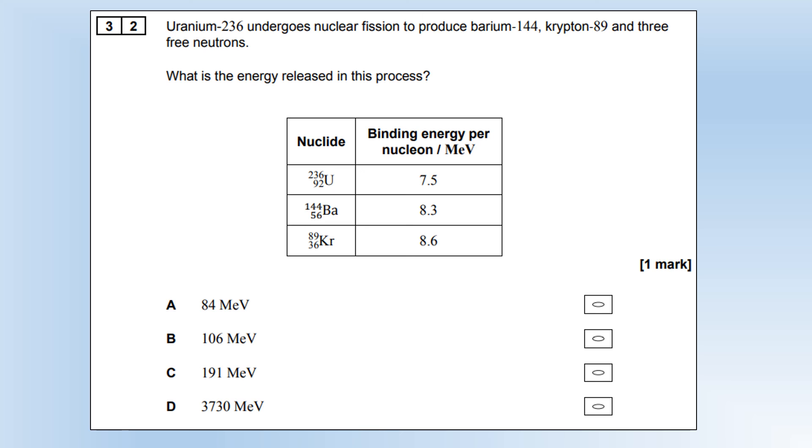Final question. Uranium-236 undergoes nuclear fission to produce barium-144 and krypton-89, and three free neutrons. What is the energy released in this process? We're going to calculate the energy before in MeV, the energy after in MeV, do the final minus initial, and that will tell us how much energy is released. The initial energy, we multiply the number of nucleons by the binding energy per nucleon. Afterwards, we multiply the number of nucleons by each of those binding energies per nucleon. Find the difference. It's 191 MeV, option C, finishing this exam paper.